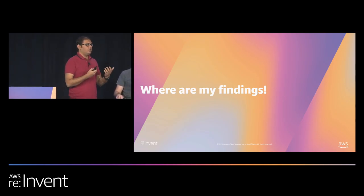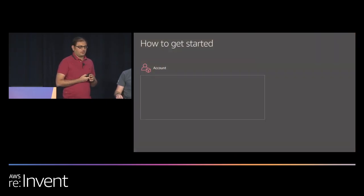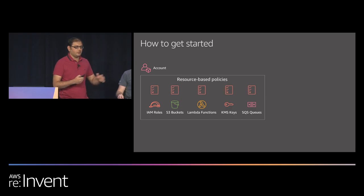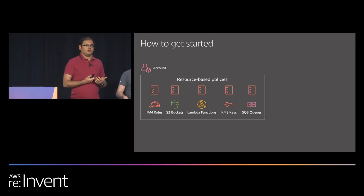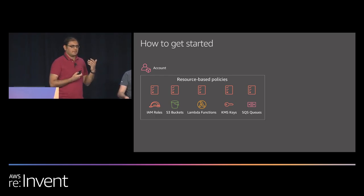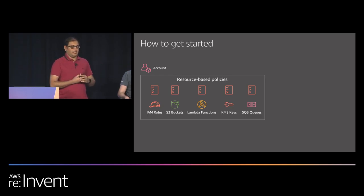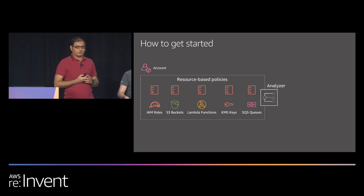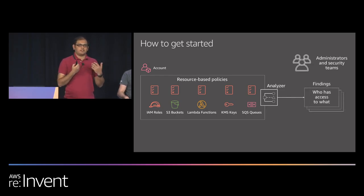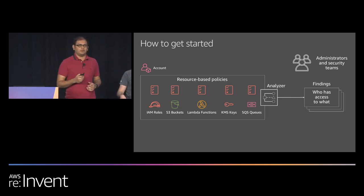We provide findings, and a logical question is: where do I see them? Getting started is actually pretty easy — you already have an account and resources. The five supported resources today are IAM roles, S3 buckets, Lambda functions, KMS keys, and SQS queues — all supporting sharing through resource policies. The only thing you need to do is create an analyzer at the account level, and it automatically starts generating findings. Administrators or security teams can look at those findings and either say they look okay or act to remediate them. If you have feedback on what additional resources you'd like us to support, please let us know.